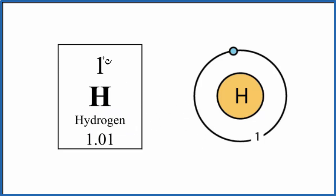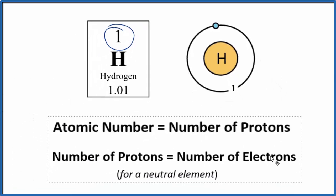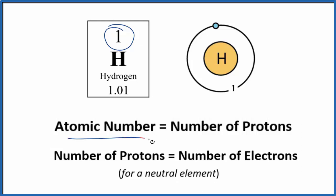So starting out, hydrogen on the periodic table is atomic number one. What that means is that the atomic number, that's equal to the number of protons here in the nucleus.